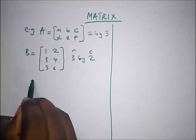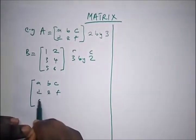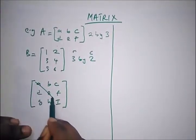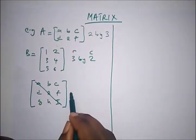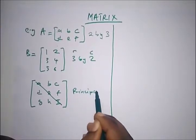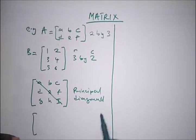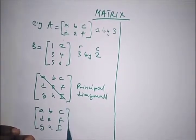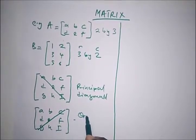Let's say we have this example of a matrix: a b c d e f g h i. The diagonal that passes from the top left to the bottom right is known as the principal diagonal, while the diagonal from the top right to the bottom left is the ordinary diagonal.